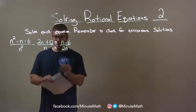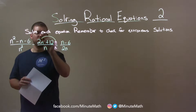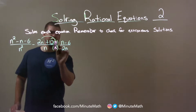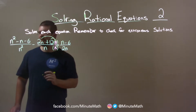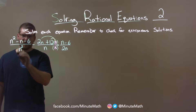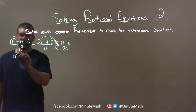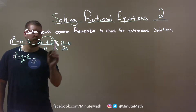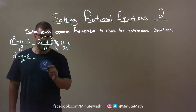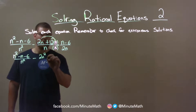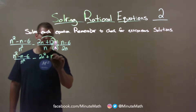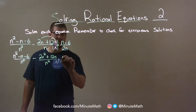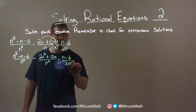Let's simplify what we can here. Remember, this n here will get distributed to both parts — let's put a little parenthesis around there, makes it a little easier to see. So left-hand side: n squared minus n minus 6 over n squared. And the right-hand side: n times 2n is 2n squared, plus 12 times n is 12n, all over n squared. And the right-hand side stays the same: n minus 6 over 2n.